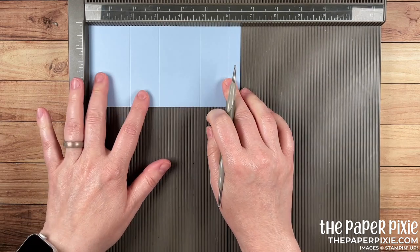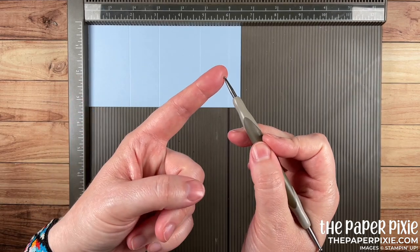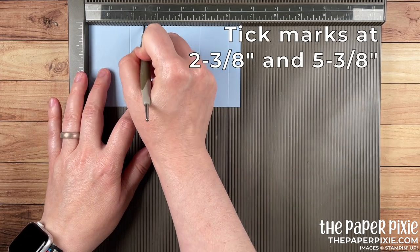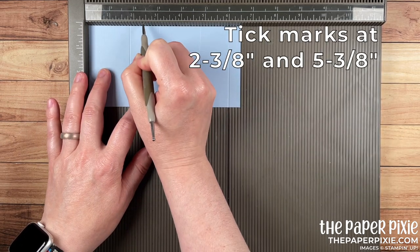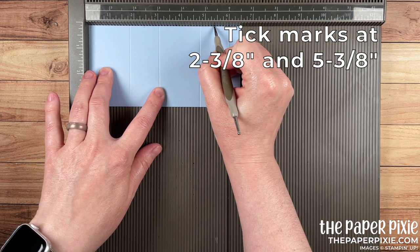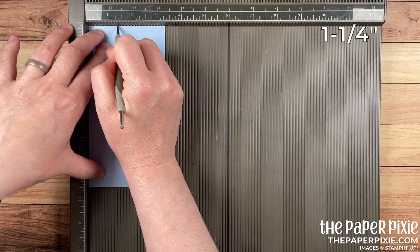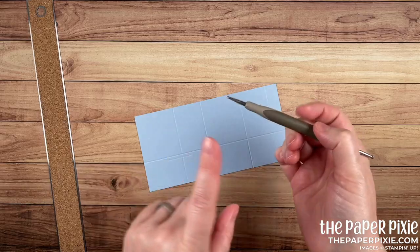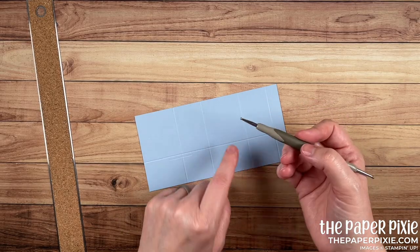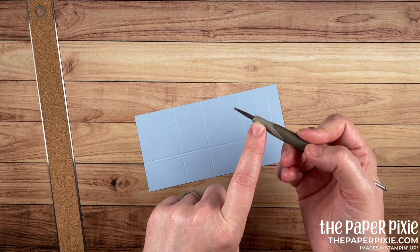While we're here, I'm going to make two tick marks, just taking the ball tip of my stylus and pressing that down at 2 3⁄8 just to make a mark, 2 3⁄8 and 5 3⁄8. Then I'm going to rotate it clockwise and score at 1 1⁄4. Hold on to your stylus from the Simply Scored, or you can use the stylus tip on your Take Your Pick tool.